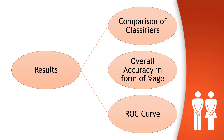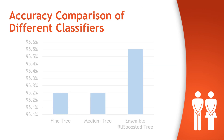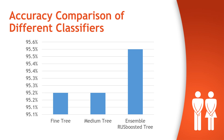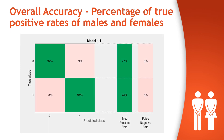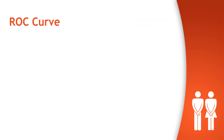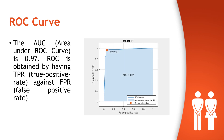In the results section, we will discuss the comparison of different classifiers, the ROC curve, and overall accuracy in percentage. You can see that the Fine Decision Tree and Medium Decision Tree gave equal maximum accuracy of 95.2%, whereas the Ensemble Boosted Tree gave an accuracy of 95.5%. The overall accuracy in terms of true positive rates for males and females is also shown. The ROC curve is obtained by plotting the true positive rate against the false positive rate, and the area under the curve is 0.97.